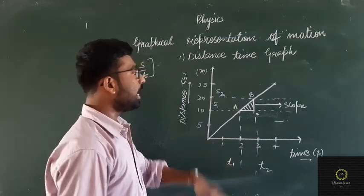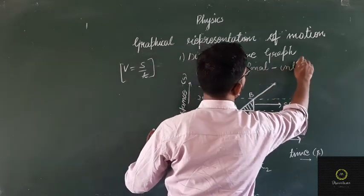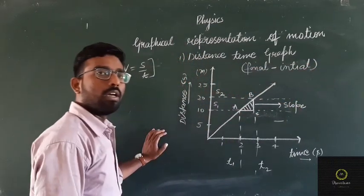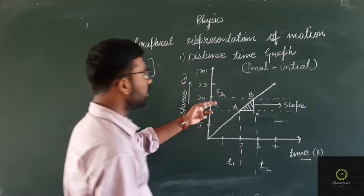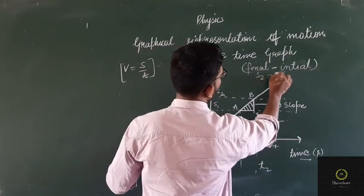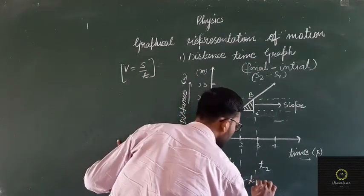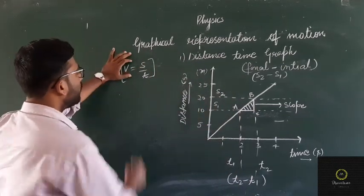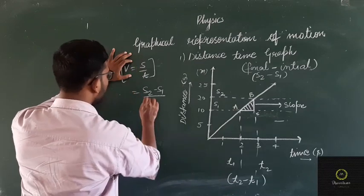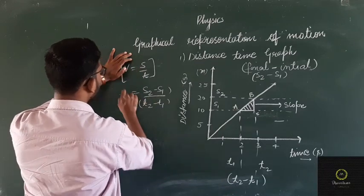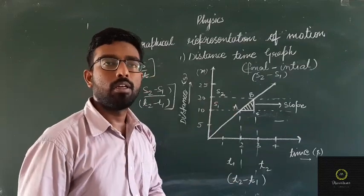We take the change in distance and change in time. Change means final minus initial. S2 is final and S1 is initial, so change in distance is S2 minus S1. Similarly, change in time is T2 minus T1. Putting these into the formula: speed V equals (S2 minus S1) upon (T2 minus T1). This is the required speed obtained from the distance-time graph.